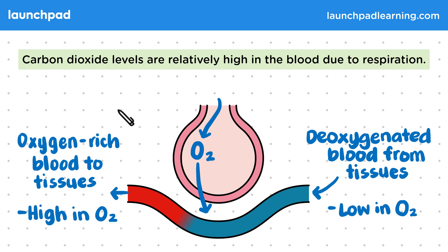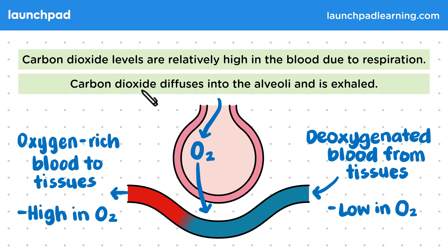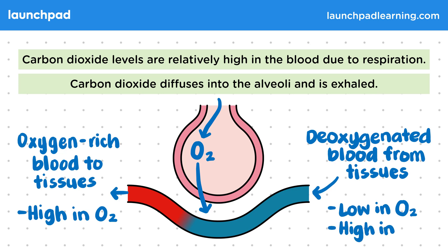Carbon dioxide diffuses into the alveoli and is exhaled. The blood over here is high in carbon dioxide. This means that there's a concentration gradient between the carbon dioxide in the blood and the carbon dioxide in the alveoli.